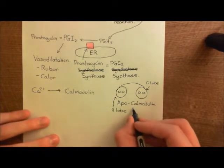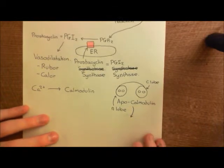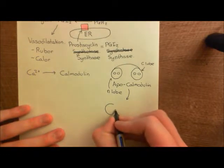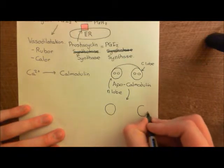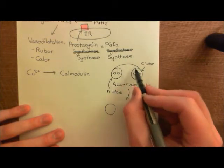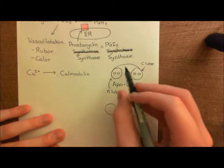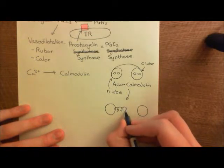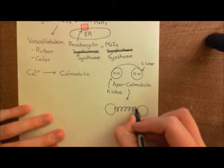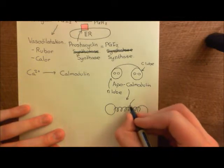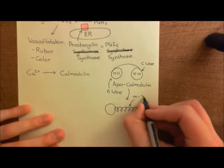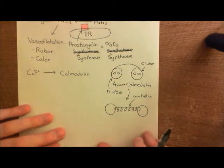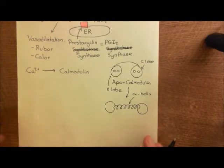When calcium binds to these binding sites on the lobes of calmodulin, what happens is that it will change conformation, and it will unhunch. The two lobes will move outwards. However, the opposite happens to the linker. The two lobes, the whole structure sort of straightens out, but then the linker goes really curvy. So the linker takes on an alpha helical structure, whereas before it had a linear structure. So this is an alpha helix connecting these two lobes together now, whereas this was just a linear structure.